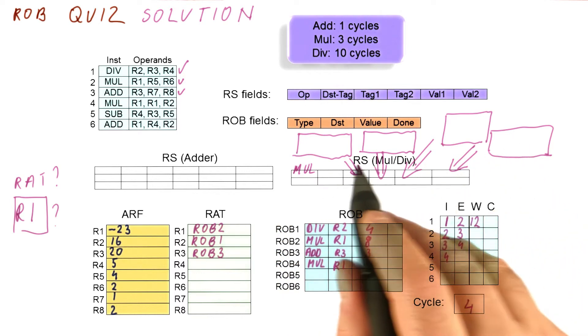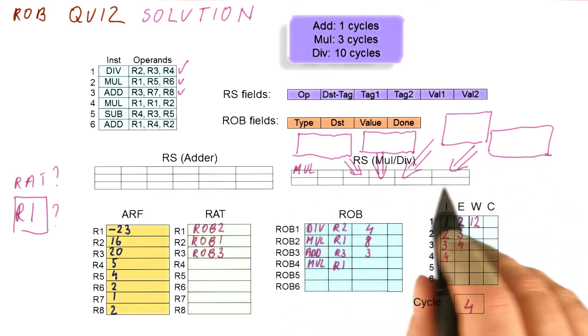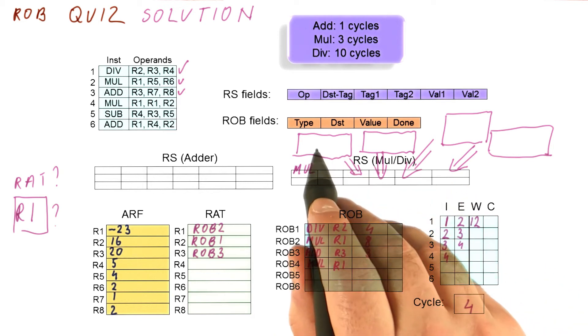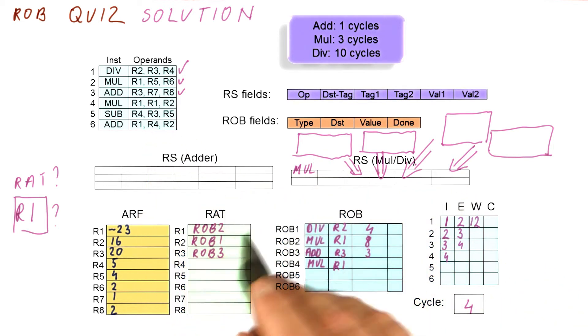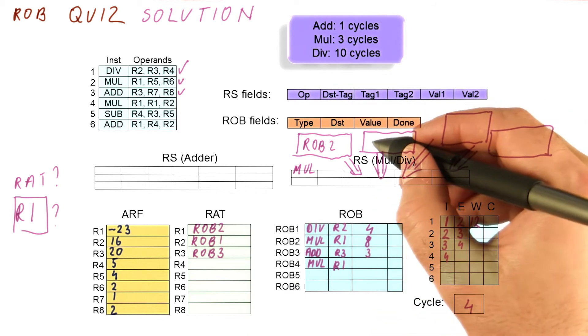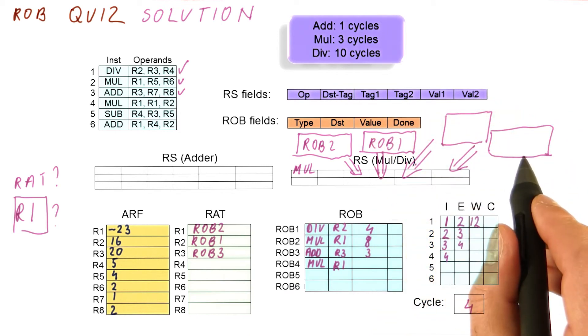So the answer here is going to be that this reservation station entry for the multiplication is going to have two tags: for R1, ROB2, for R2, ROB1. And it's not going to have either of the values.